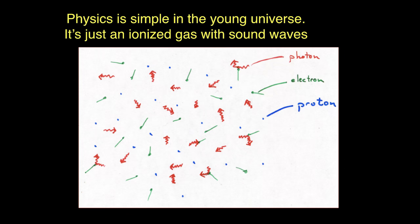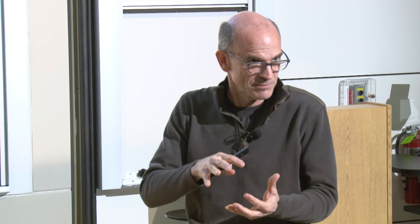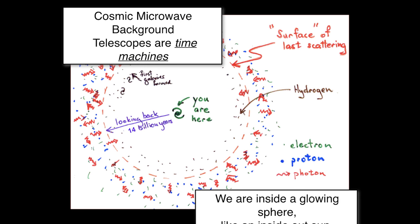Picture the early universe as a simple gas: photons bouncing around, protons moving slowly because they're heavy, and electrons whizzing around interacting with light — it's all plasma. If you tried to compress this material, the photons would push back. This supports sound waves — compression and rarefaction — so you have this plasma with sound waves in it.